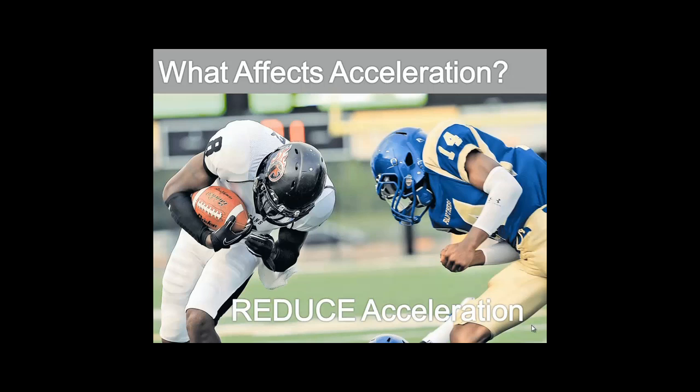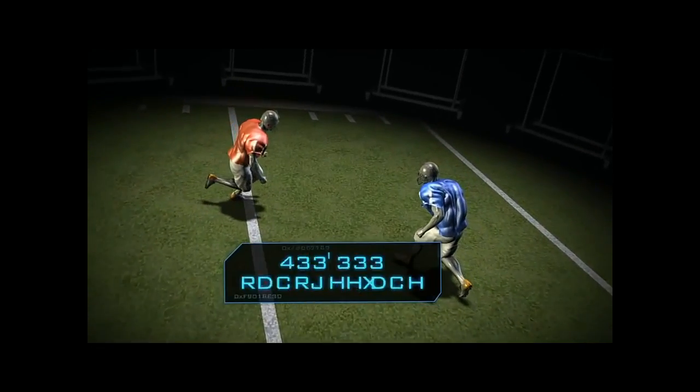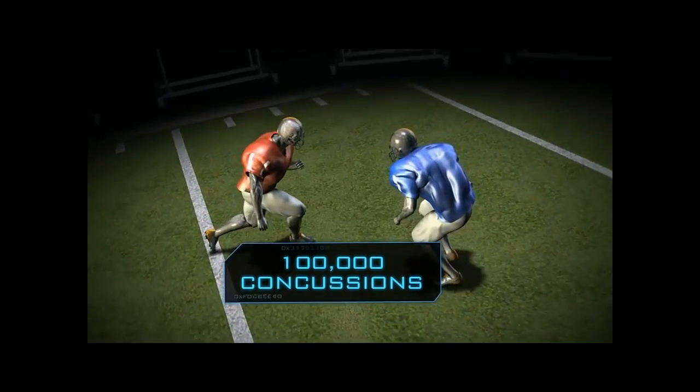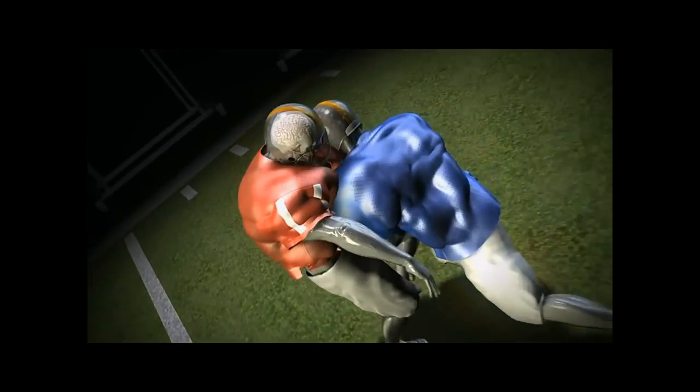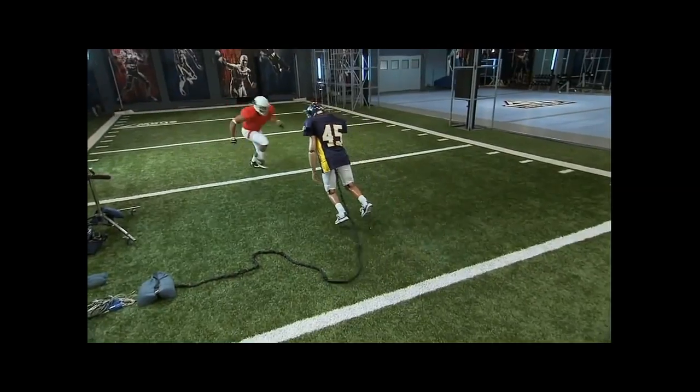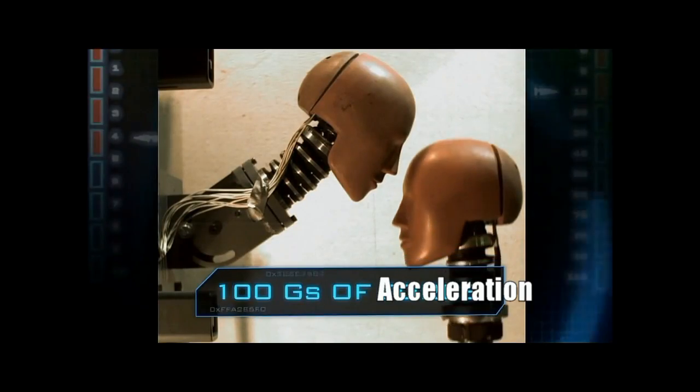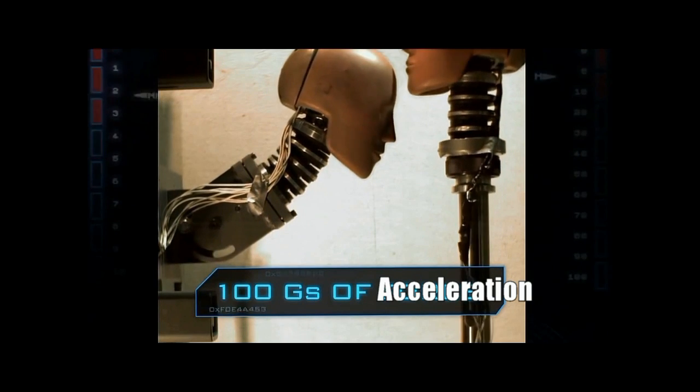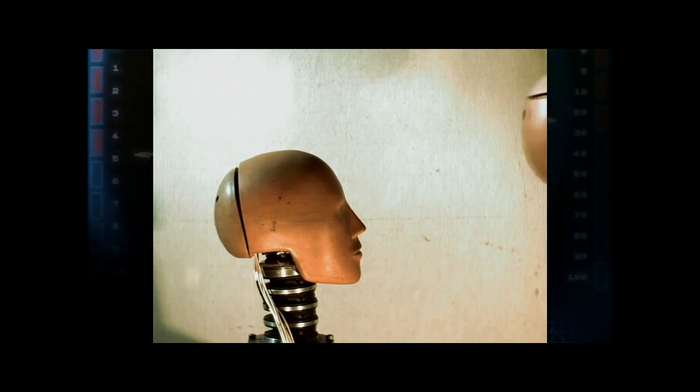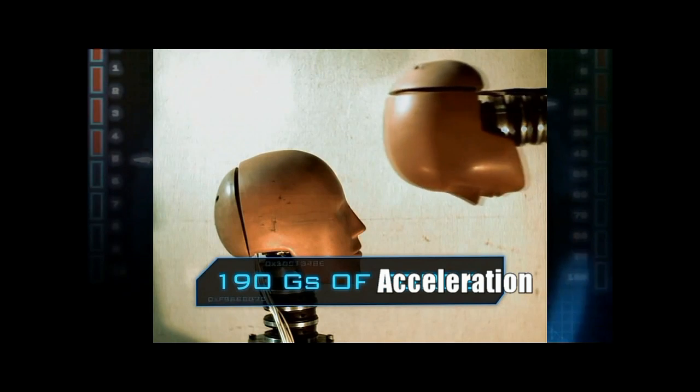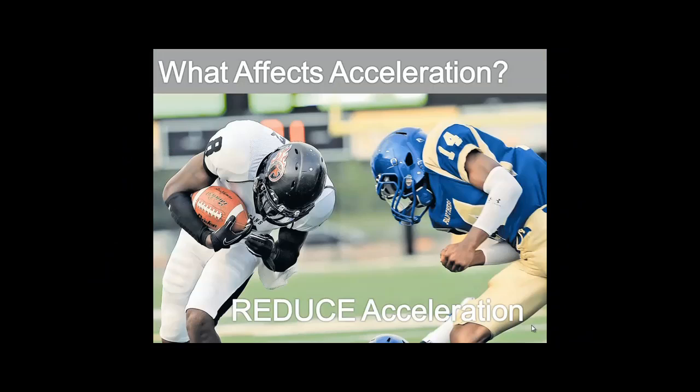A situation which involves where we want to reduce acceleration would be a head-on collision in a football situation where one person tackles another person. The acceleration that a player experiences is related to whether or not they're going to experience a concussion or brain injury due to that impact. If you're an engineer designing a football helmet, you want to figure out what can we do that would reduce the acceleration involved during that impact.